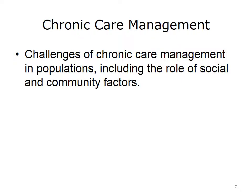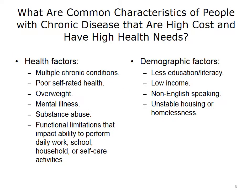There are a myriad of challenges for chronic care management in populations, including the role of social and community factors. What are the common characteristics of people with chronic disease? Often these people are high cost with very high health care needs. Many patients with chronic disease do not present with just one chronic condition but often with multiple chronic conditions. They rate their health as very poor. Often they are overweight, have diagnoses of mental illness and substance abuse, or have functional limitations that impact their ability to go to work, school, or maintain their household.